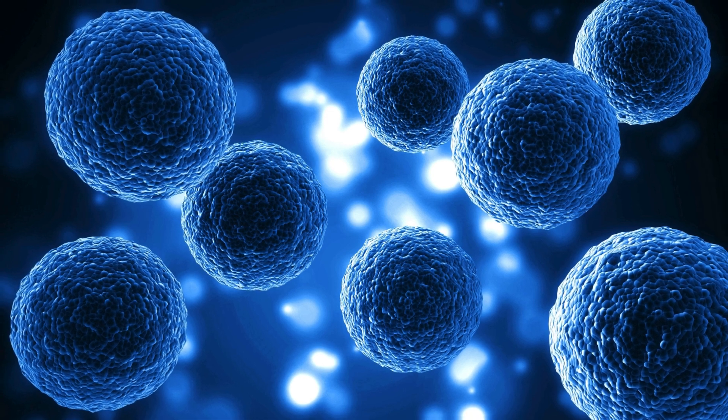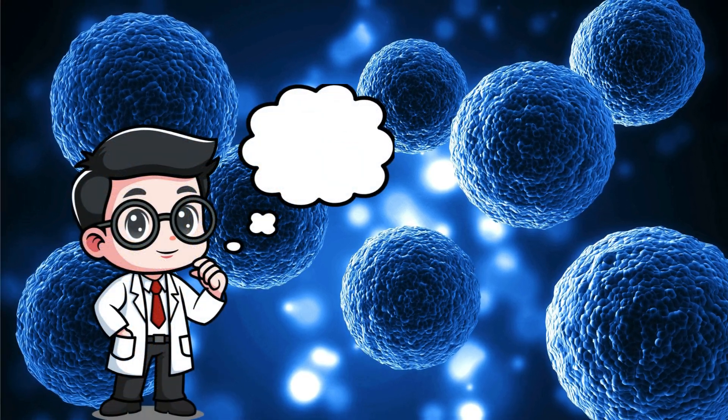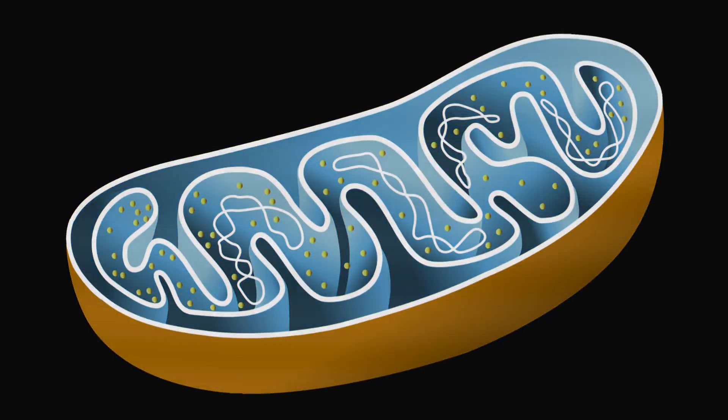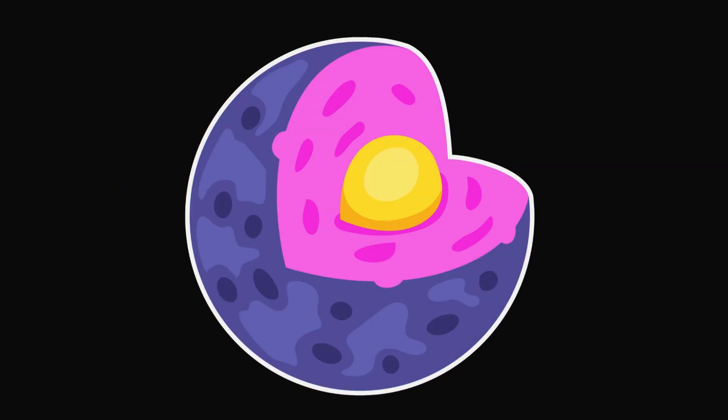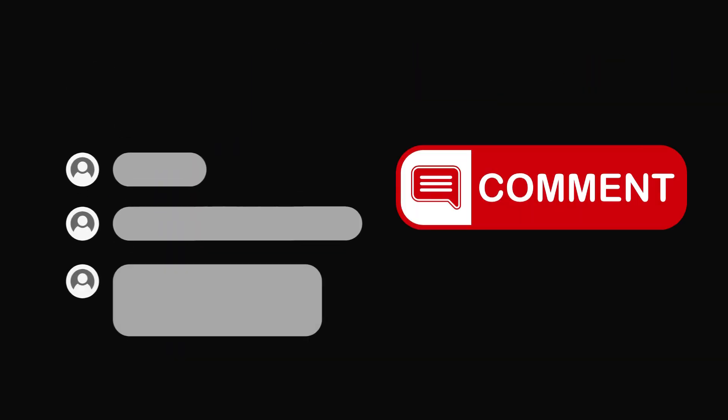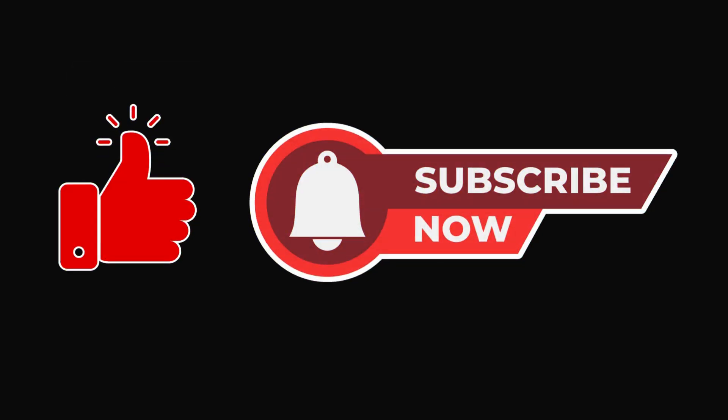And now it's your turn to think like a cell scientist. Which organelle do you think is the most important? Is it the mitochondria powering every move? The nucleus giving out orders? Or maybe the chloroplasts making food from sunlight? Let us know what you think in the comments below. We'd love to hear your opinion. And if you enjoyed this tiny tour through Cell City, don't forget to like, subscribe and hit that bell icon.